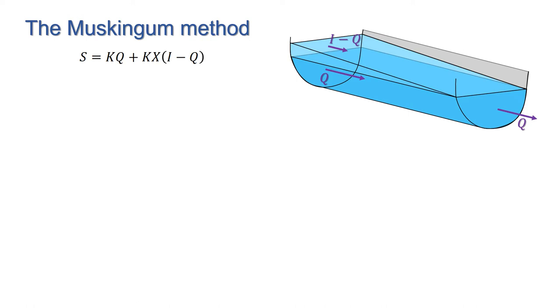The storage in the routing reach is represented by this relationship between discharge and storage. Let's unravel this a bit. If you look at the diagram, the lower part of the channel generates a prism of water, which is what we would have if the incoming and outgoing discharges were equal. There's also a wedge above that with the additional fluid due to the difference in discharge, i minus q.